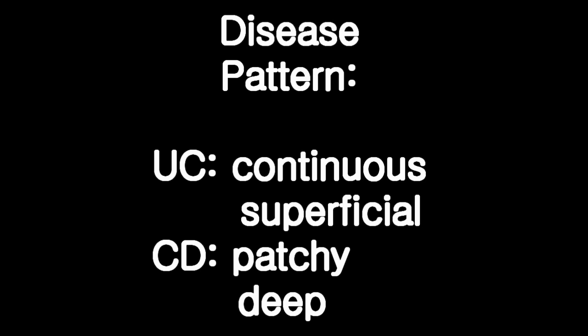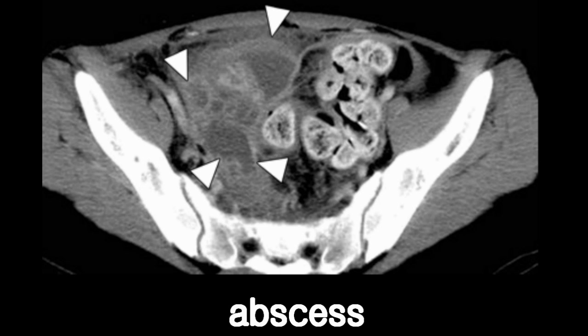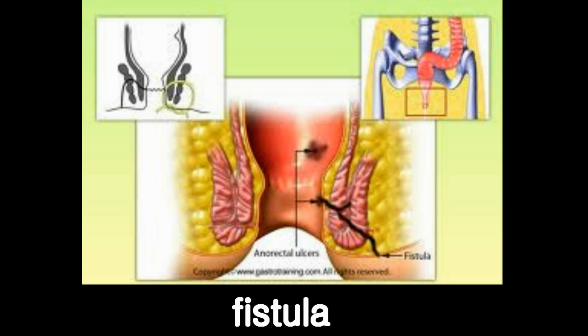Inflammation in ulcerative colitis tends to be diffuse, superficial, and always starts from the rectum. In contrast, Crohn's disease tends to be patchy and penetrating, and usually starts near the distal portion of the small intestine called the ileum. In fact, deeper Crohn's disease can sometimes lead to conditions such as abscess, fistula, and stricture.